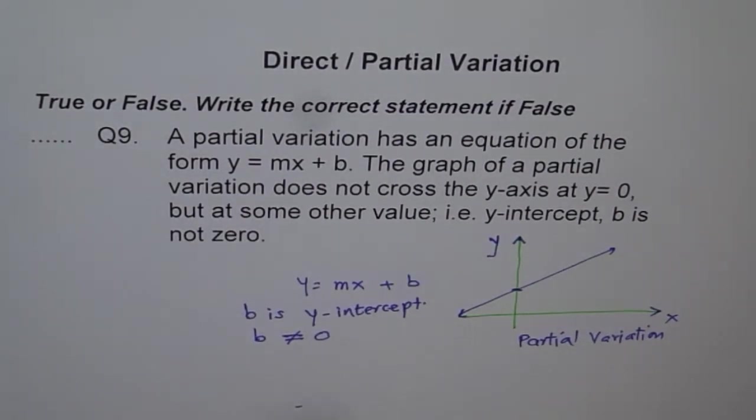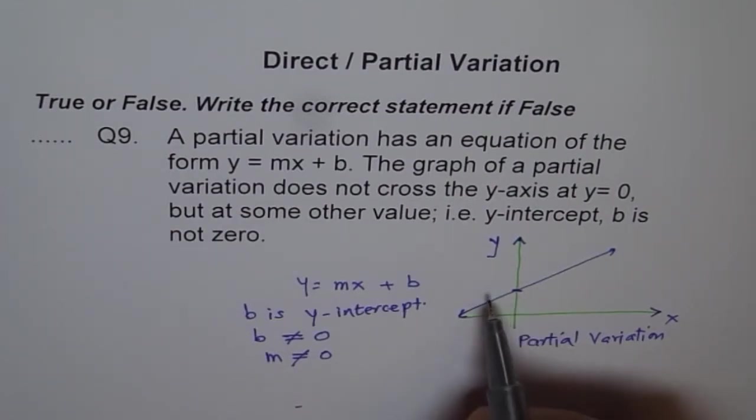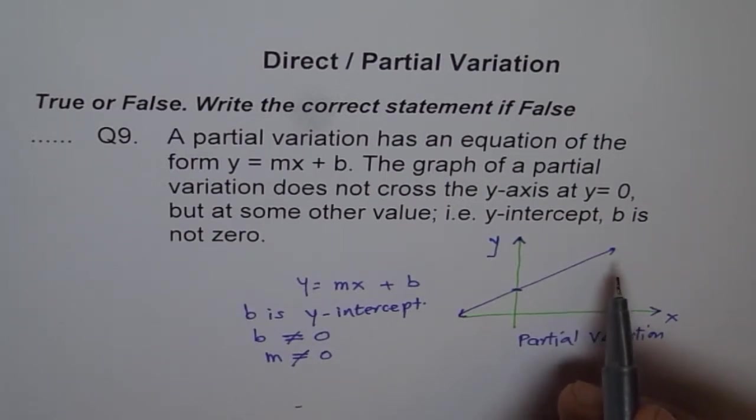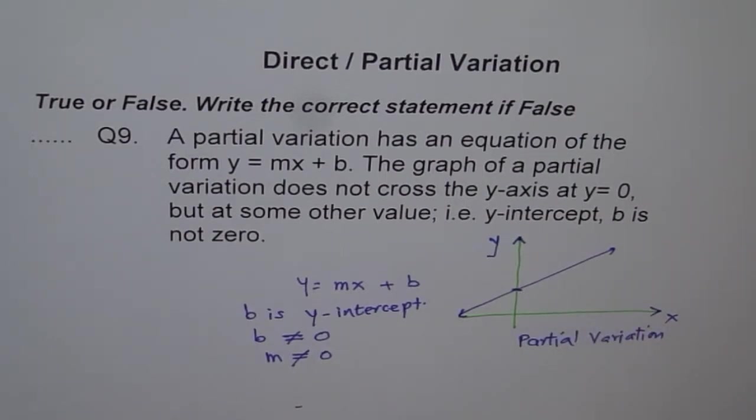m could be any real number. But m, in this case, there is a restriction on m also, that m is not equal to 0 for partial variation. Well, for partial variation, we can't put m equals 0. It will be just a fixed cost and no variation in that case. So in general, we prefer not to put m as 0 also.